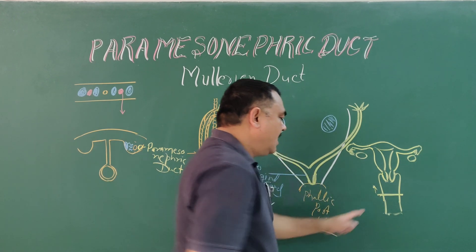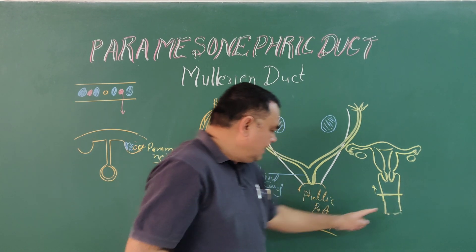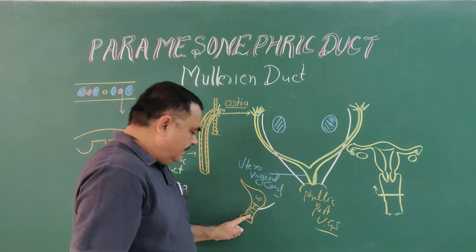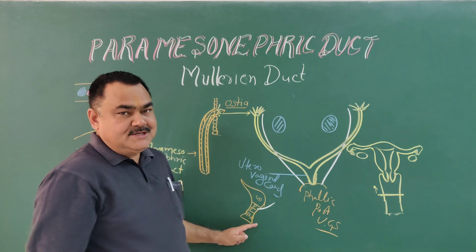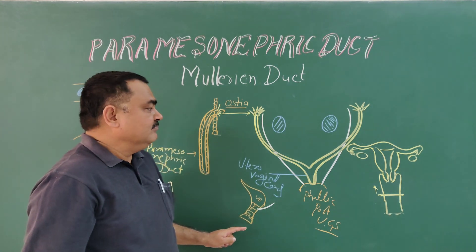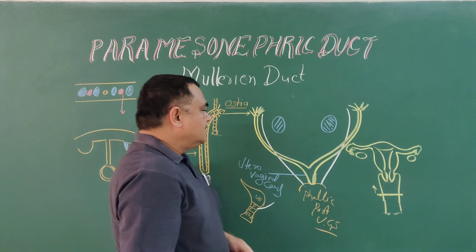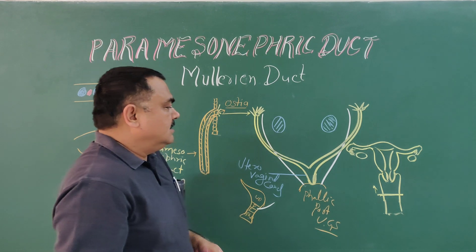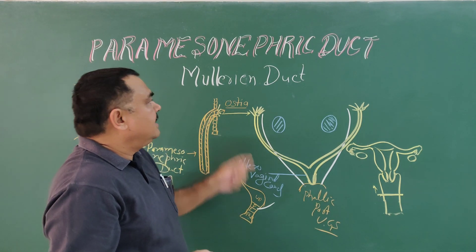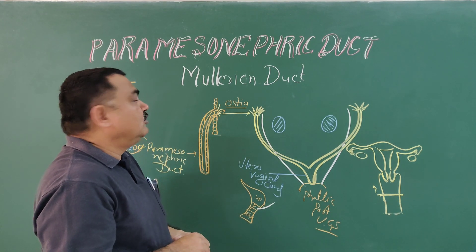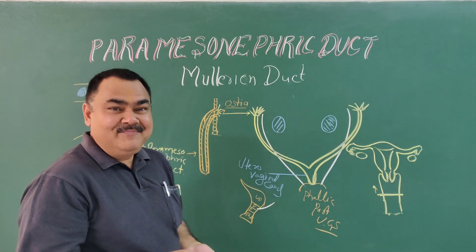So these structures — uterus, cervix, and upper part of the vagina — derive from the utero-vaginal canal. The lower part of the vagina is formed by the pelvic part of the urogenital sinus. These structures derive from the Müllerian duct, or paramesonephric duct, in the female.